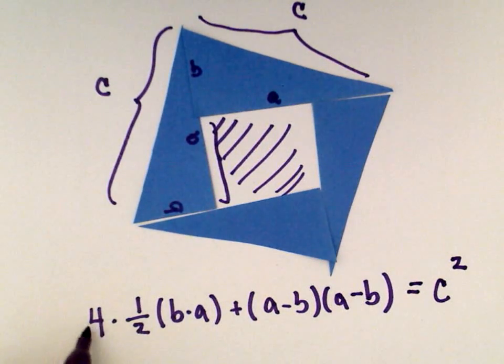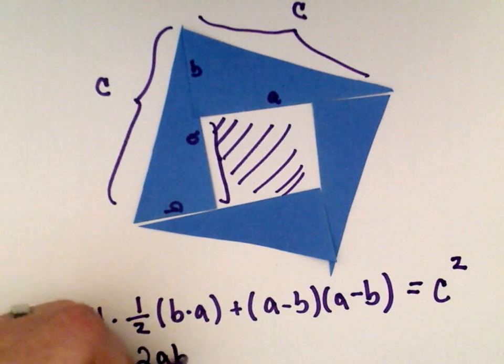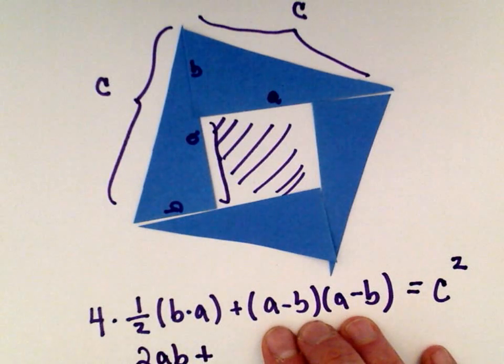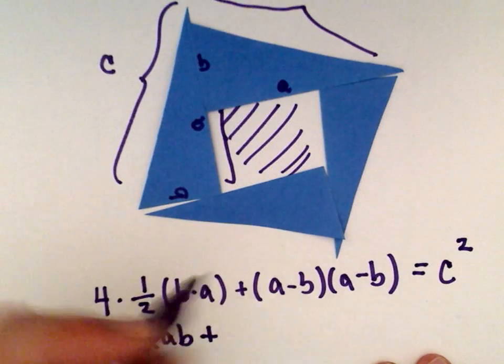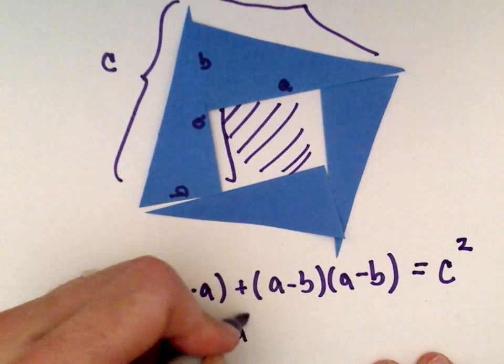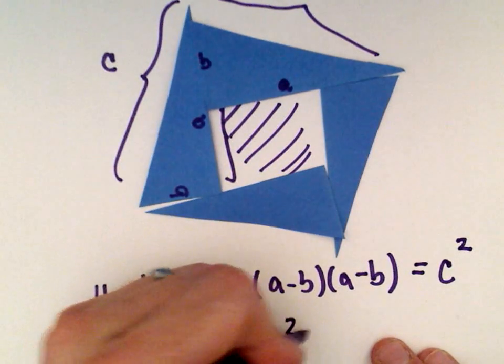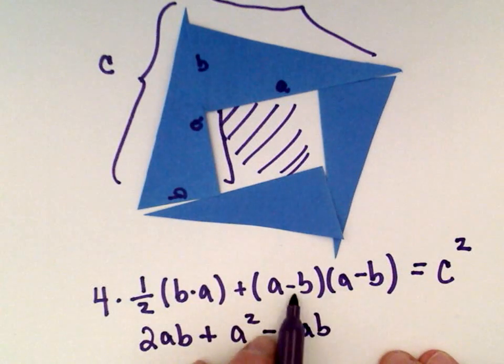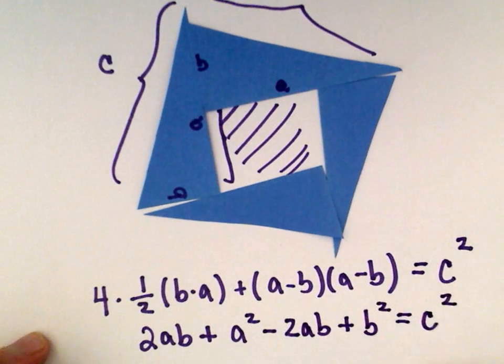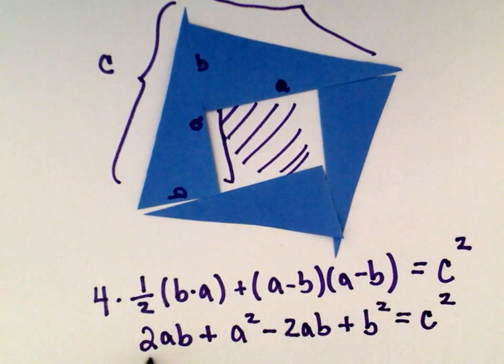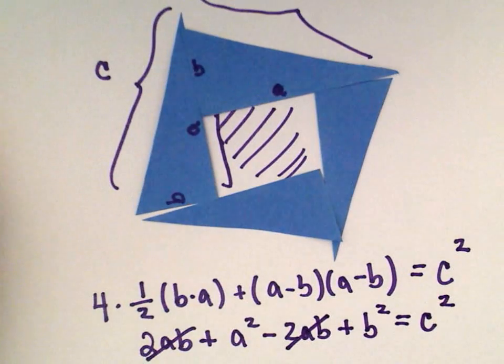Four times a half is going to give us two, two times AB. Now we can distribute A minus B times A minus B. A times A, that's A squared. We'll have minus AB minus another AB, or minus 2AB. Negative B and negative B is going to give us positive B squared. Now we can simply subtract the like terms. We have 2AB minus 2AB, so those are going to cancel.